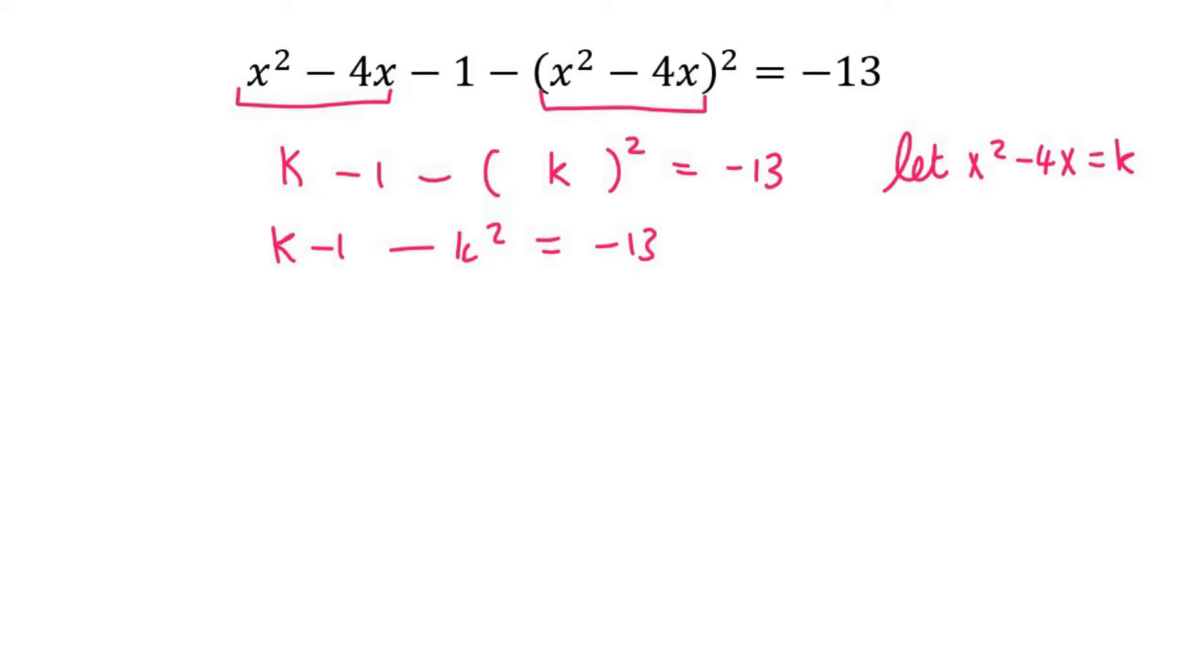We just solve for k. I'm going to take everything to the right-hand side, and then this should factorize like that. So k would be equal to 4, or k would be equal to -3.